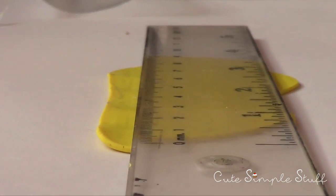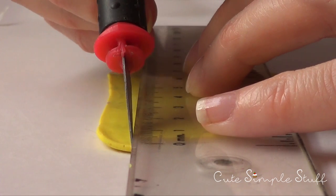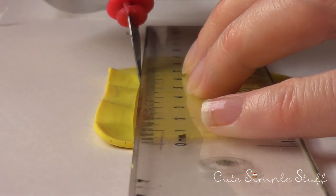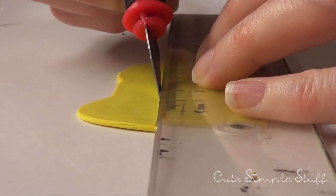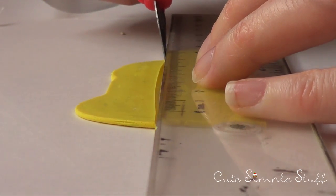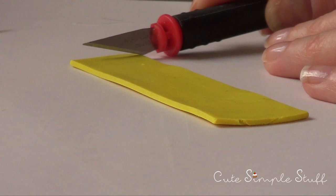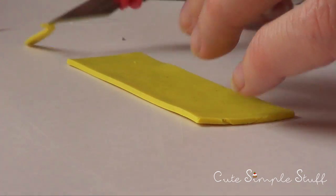I'm just going to take a ruler and my exacto knife and I'm just going to cut a fairly big piece, just because I want my edges to be neat and straight as I can make them. Then I'm just going to cut the edges to make it rectangular looking.